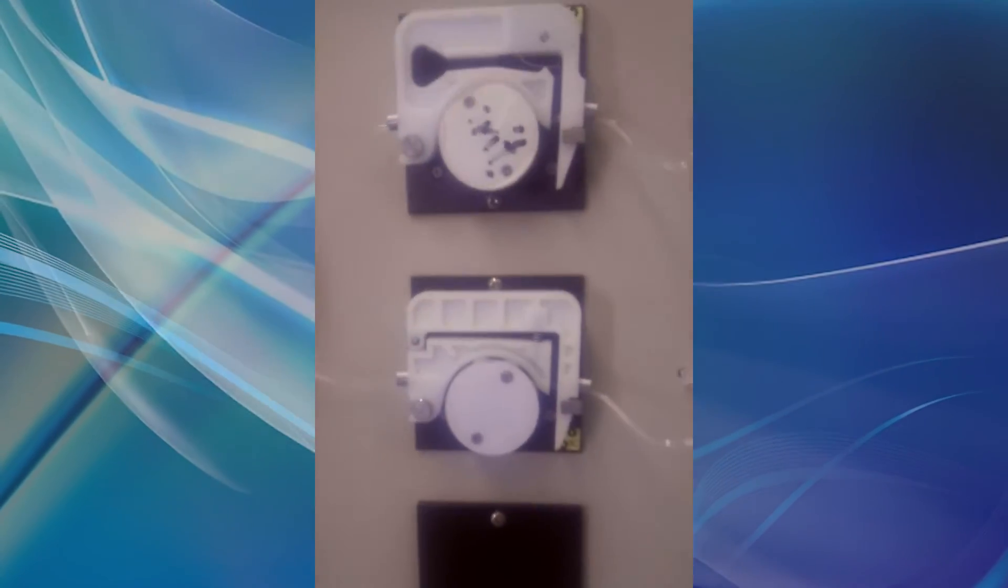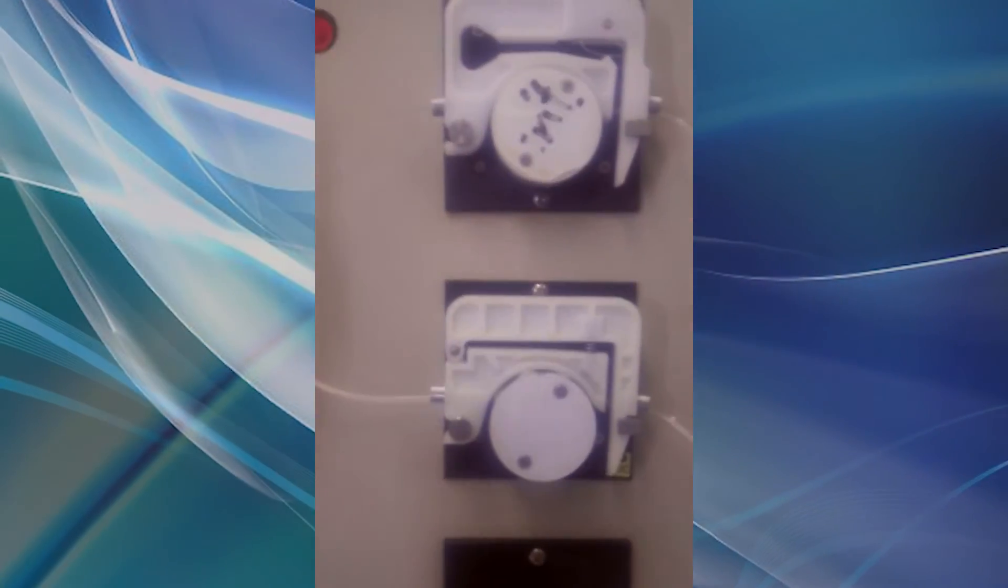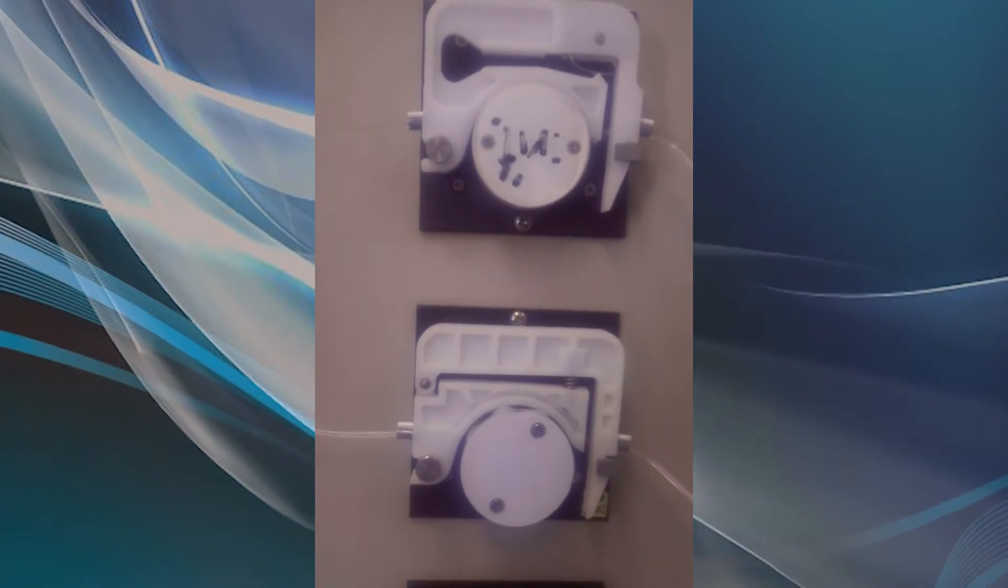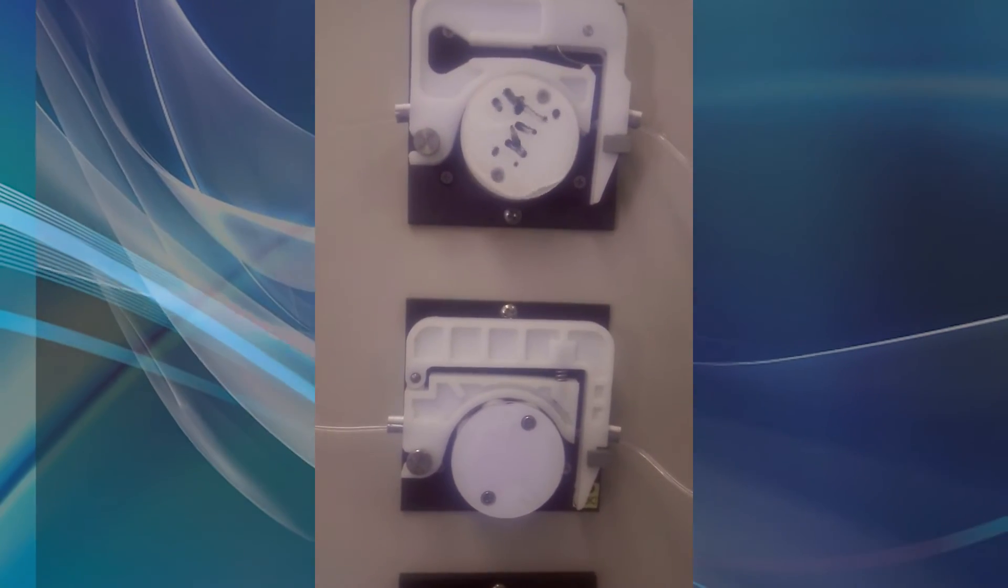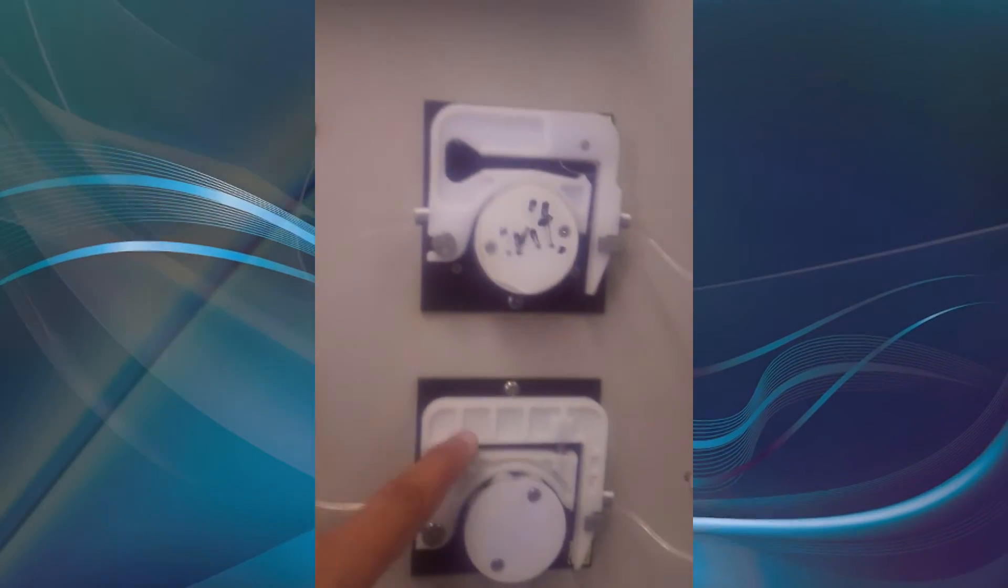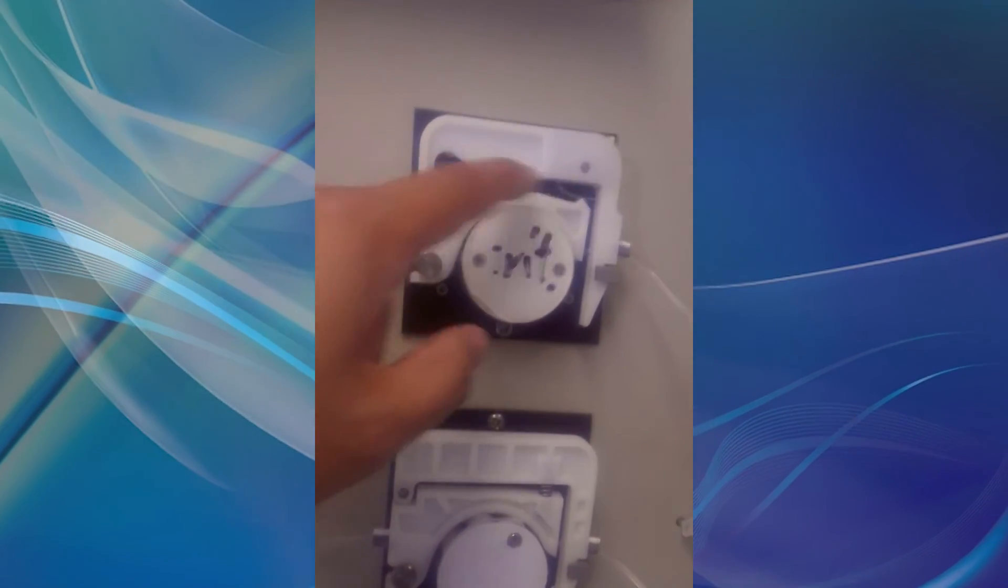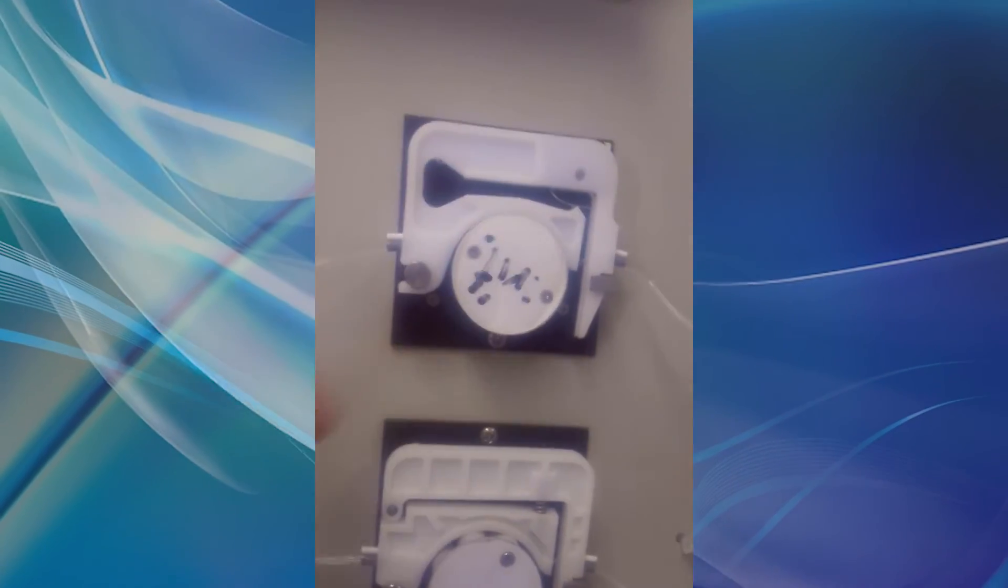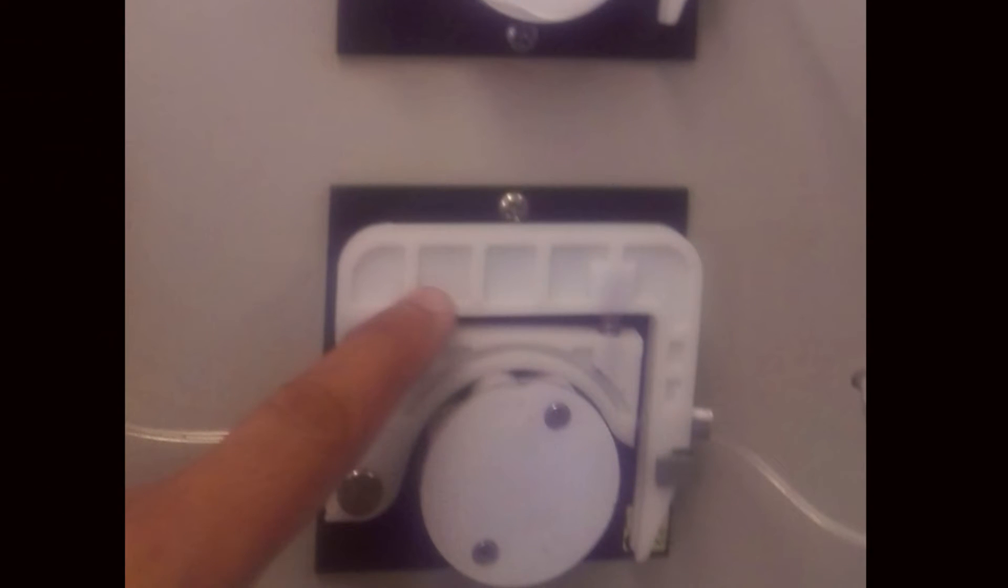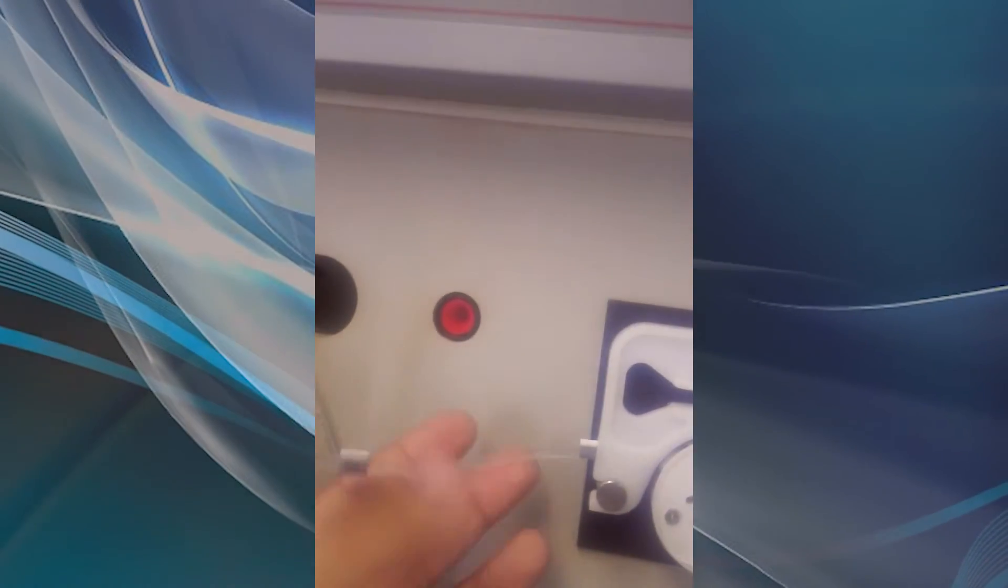These two are reagent pumps. These could be peristaltic or micropiston pumps; in this case, these are peristaltic pumps. One is the conditioner pump to inject conditioner. The second is the titrant pump to inject titrant for titration. This is the pump cassette with Tygon tube with grey-grey specification.